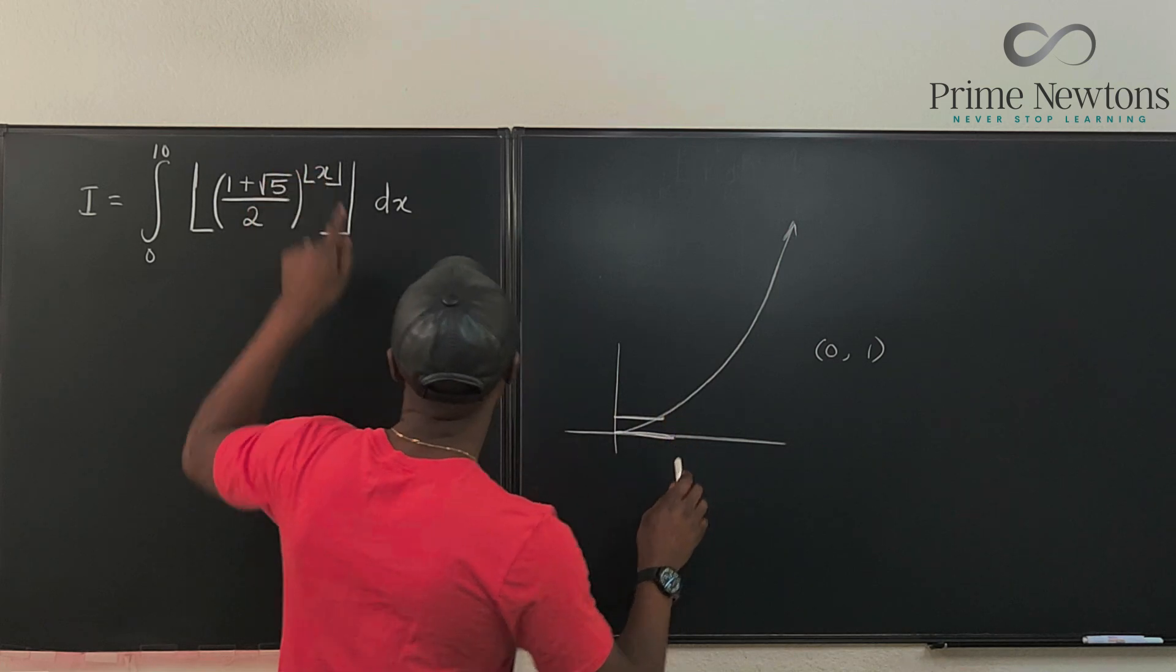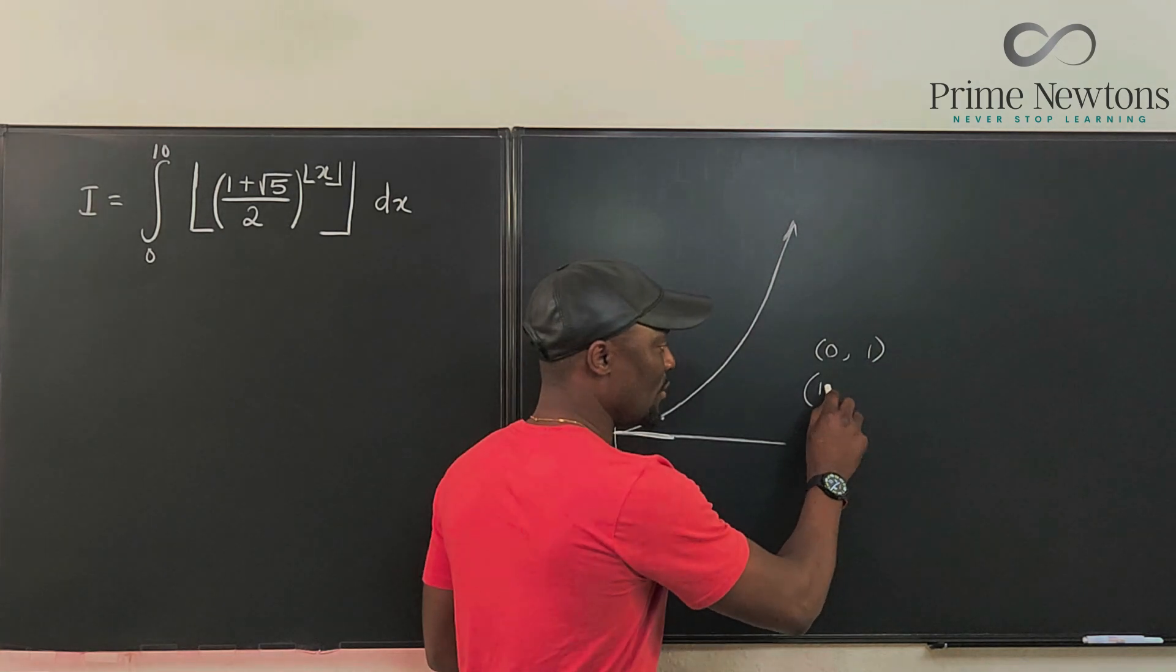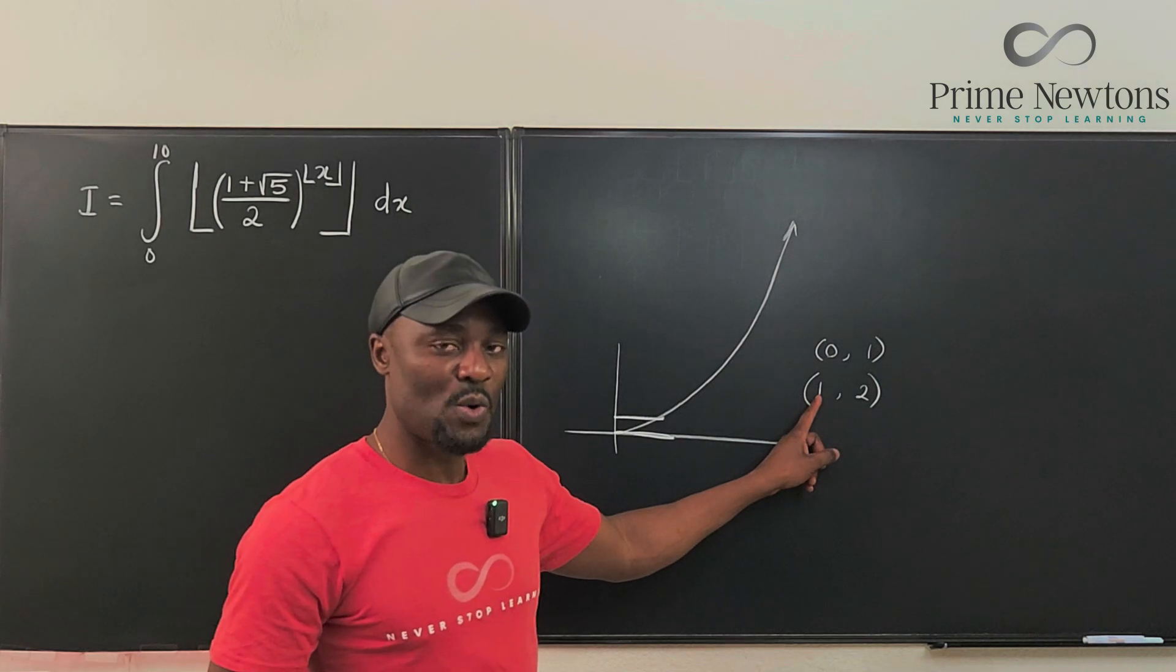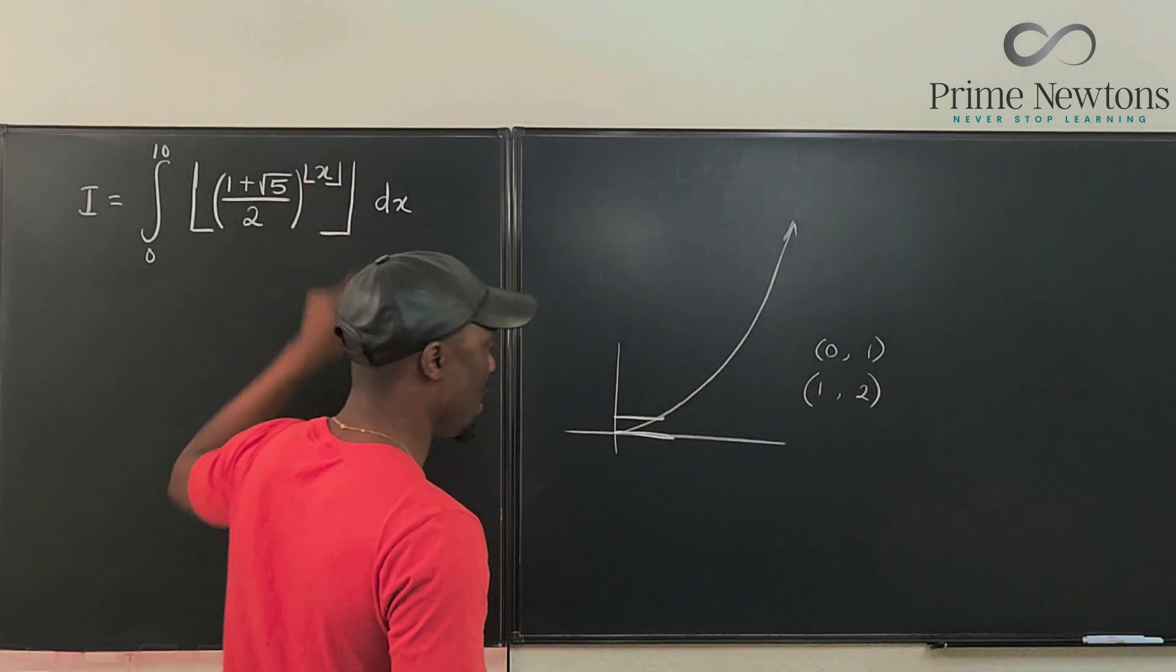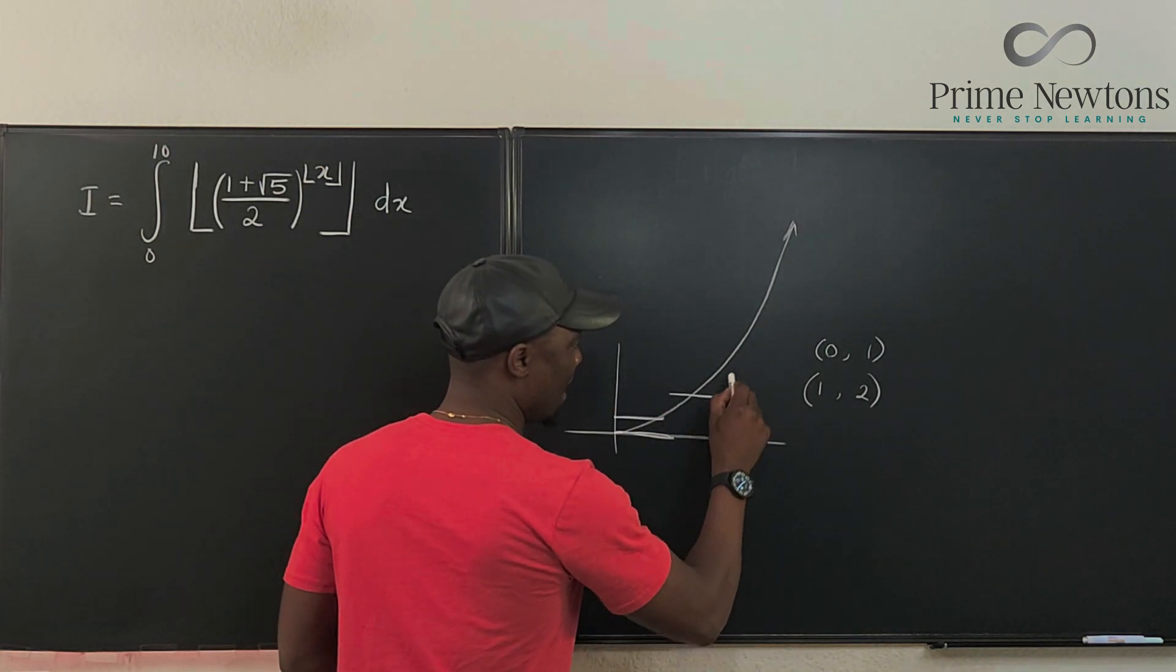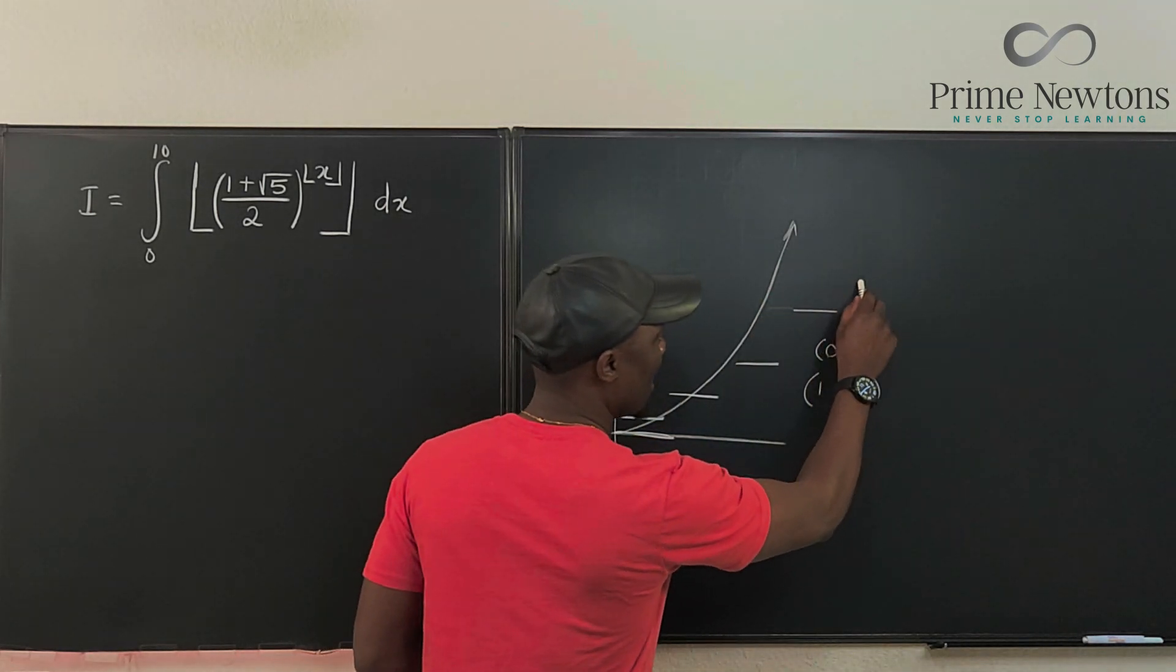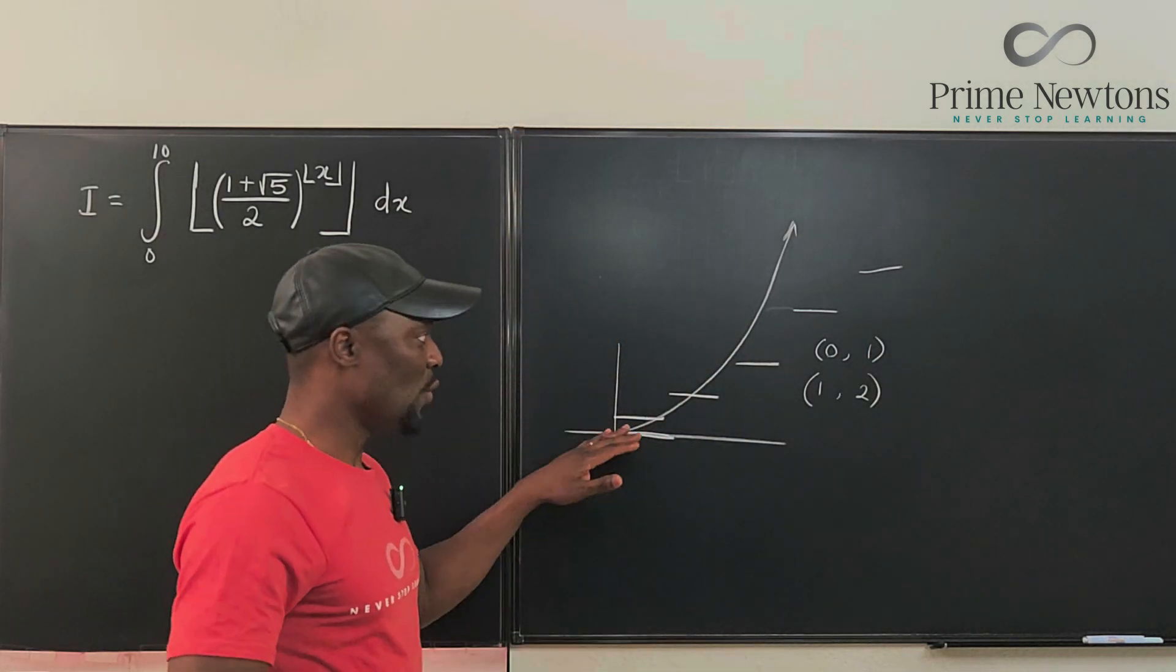And then as soon as you go past one, this interval between one and two, the floor becomes one. So what you have is just going to be this value raised to power one, because that would be the new floor. Everything is going to be along this line, but it's just going to be a bunch of floors like that. So it goes on forever.